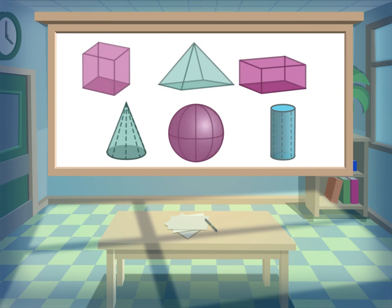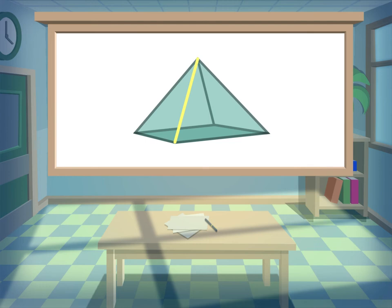3D shapes have edges. Edges are where two faces meet. This shape has eight edges. 1, 2, 3, 4, 5, 6, 7, 8.